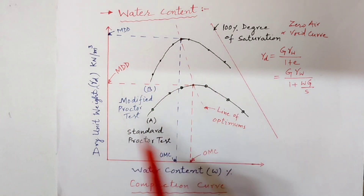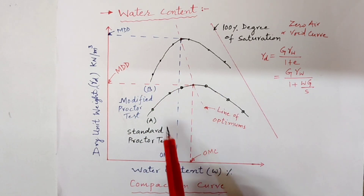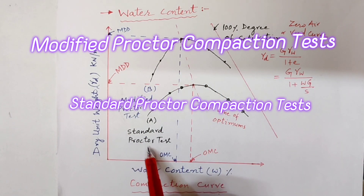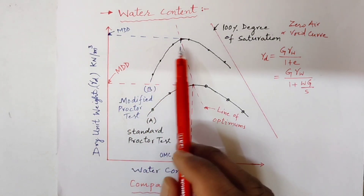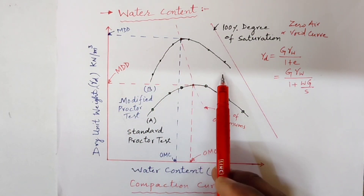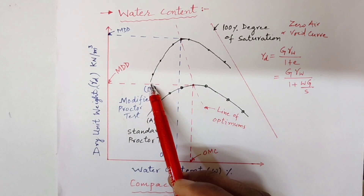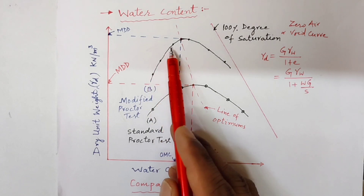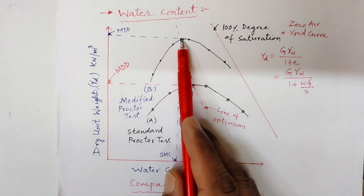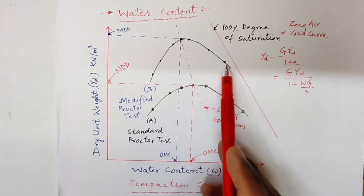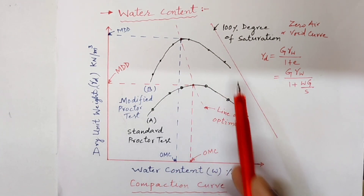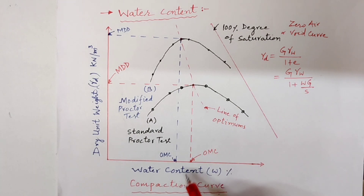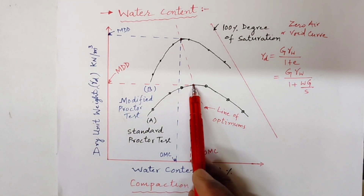There are two tests we will discuss in the next lecture — standard Proctor and modified Proctor. The same pattern shows in modified Proctor also: initially, when the water content increases, the dry density also increases, but only up to a certain limit. After that, it decreases when moisture content increases. This curve is unique for a given soil type, method of compaction, and compactive effort.